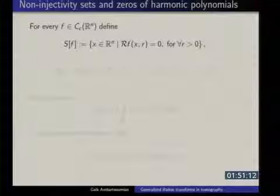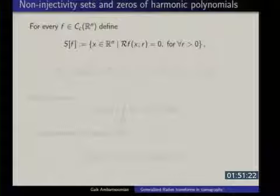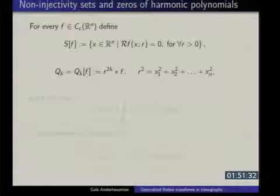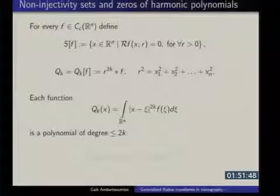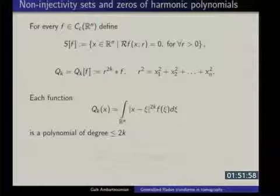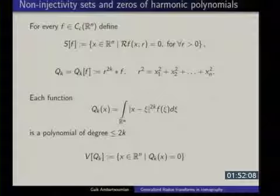Q_K is a convolution of the function with |x|^{2K}. More precisely, Q_K(x) is the integral of |x - c|^{2K} f(c) dc. R^2 is defined as you would think, and Q_K is a polynomial in x of degree 2K — you can see this by differentiating that many times. V(Q_K) is the zero set of Q_K. So Q_K are these polynomials and V(Q_K) is the set of their zeros. The significance of these definitions will become clear in a moment.